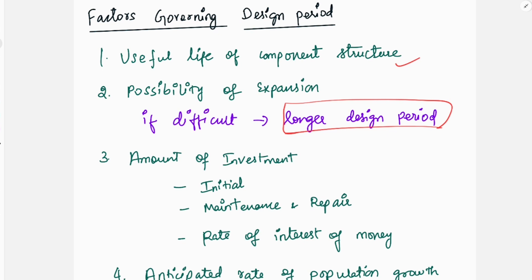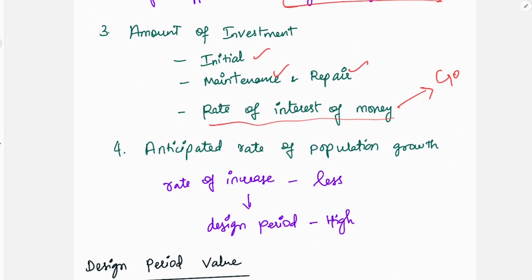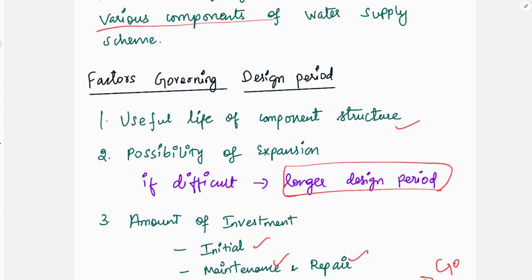So, the amount of investment, the maintenance and repair, the rate of interest. If you look at this, the government would have to do it. This is the anticipated rate of population growth. Now, the rate of increase is less. We have a high design period. We have a constant growth rate for 50 years. However, if we have a very exponential growth, the rate of increase is less. So, this is the factors governing the design period.